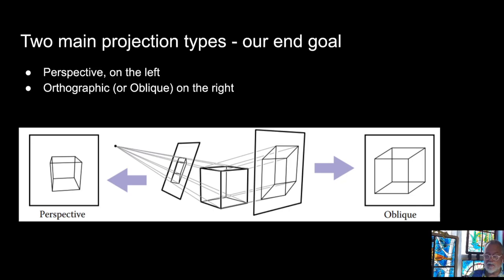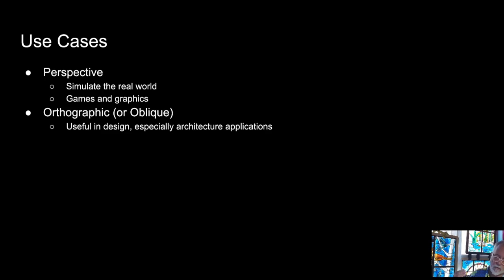Let's look at some of the uses for this. So perspective looks like the real world. And orthogonal or oblique looks nothing like the real world. There is no camera that takes an orthogonal shot. So for perspective, we're simulating the real world. And for games, graphics, visualization, orthographic or oblique is a non-real camera that we use to portray information in a different way.